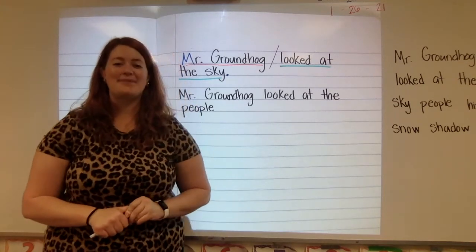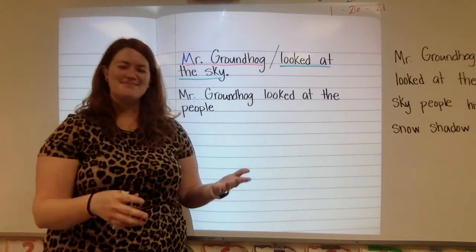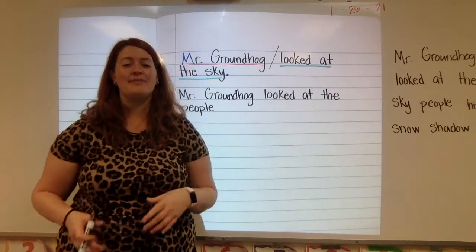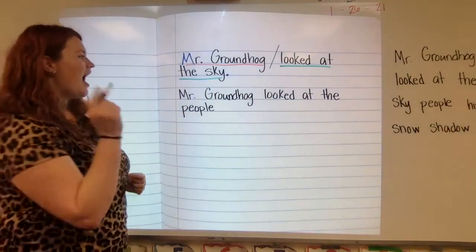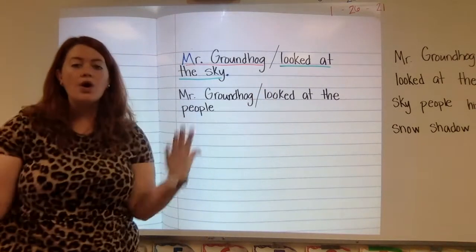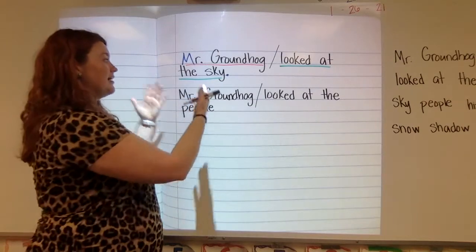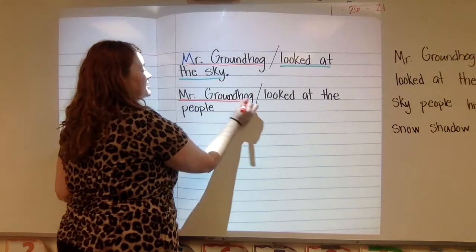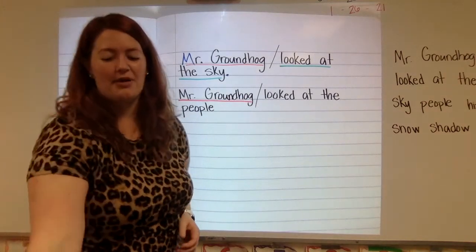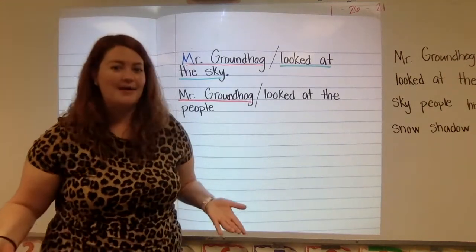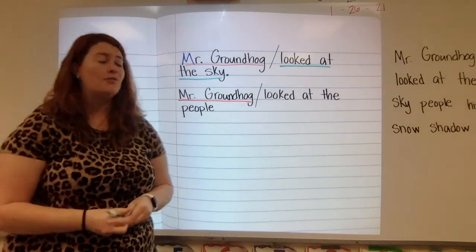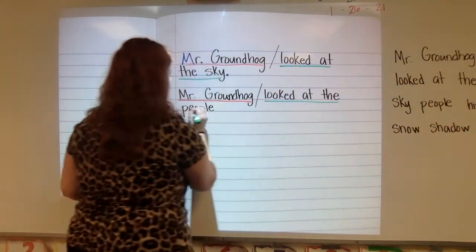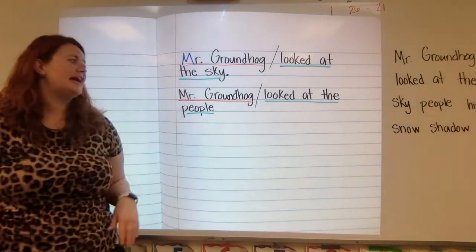The first thing I need to do is separate my subject from my predicate. I'm going to separate the who or what from the doing-telling part. I think I'm going to separate it right here, because this whole sentence is about Mr. Groundhog. So I'm going to underline my subject in red. What about Mr. Groundhog — what was he doing? He looked at the people. So that's my predicate, and it's going to be underlined in green.